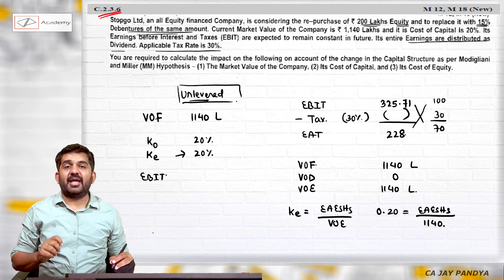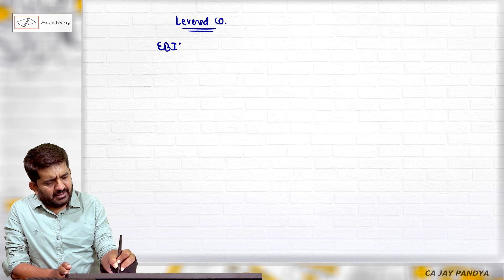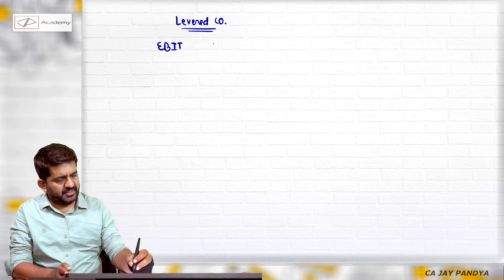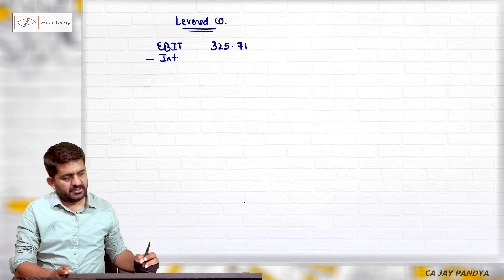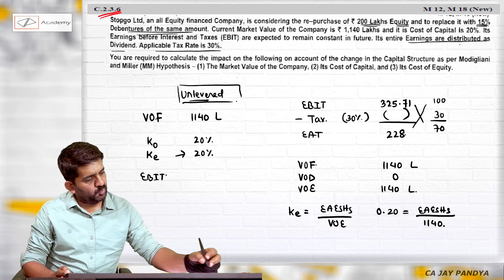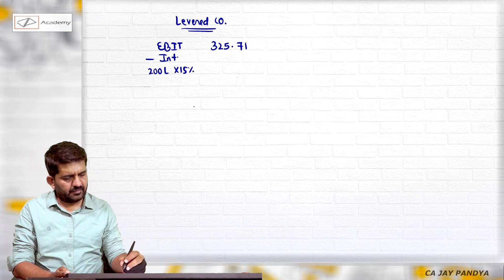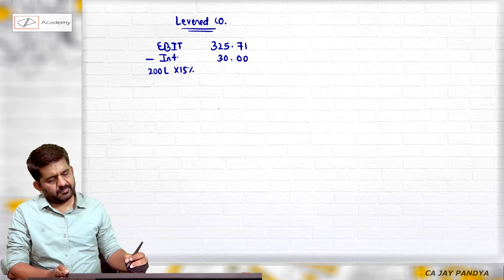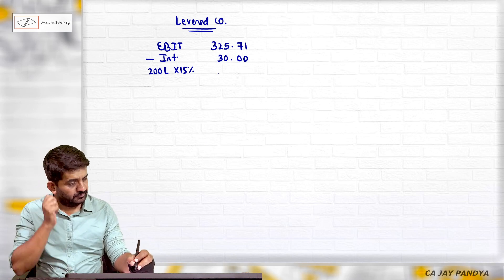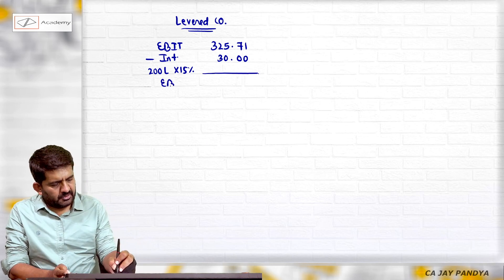Which is EBIT and which is expected to remain same. Convert this company into a levered company. EBIT is going to remain same which is 325.71 minus interest. Interest will be 200 lakhs of 15 percent, which will be 30 lakhs. This is earning before tax.